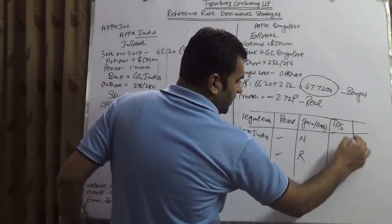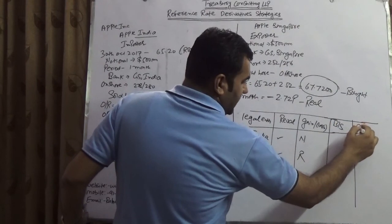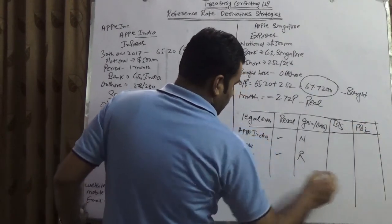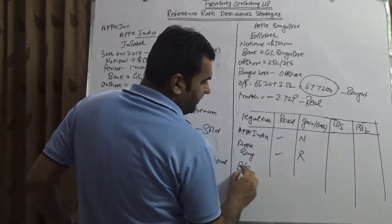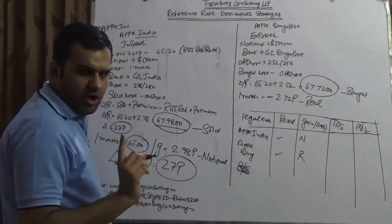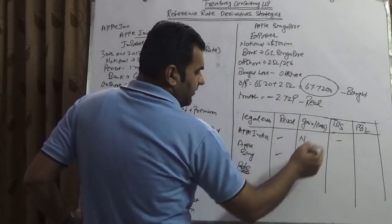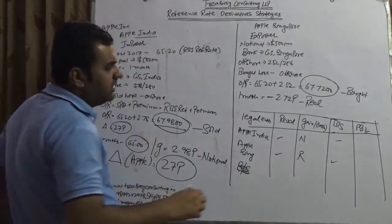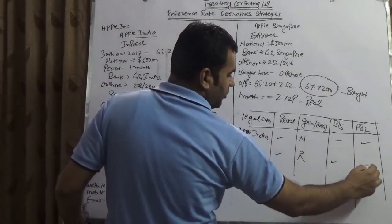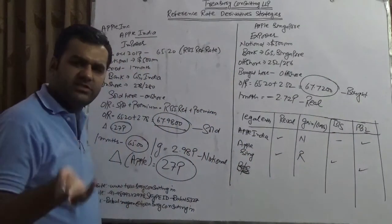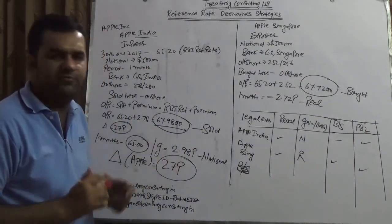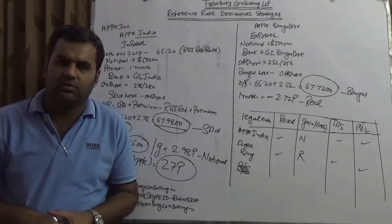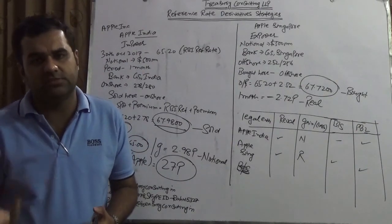Apple India would be facing revaluation because the functional currency was INR, the contract is in dollar. Apple Singapore would be facing revaluation—the functional currency was Singapore dollar, the contract taken is in dollar. The gain and loss in Apple India is notional, on the other hand it is real. But once we consolidate, there is impact on the balance sheet and cash position. Let me write another column which is balance sheet and P&L.